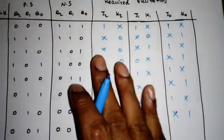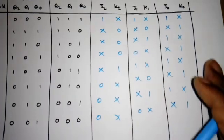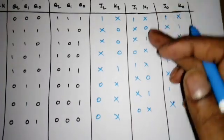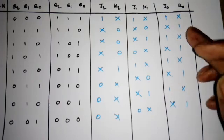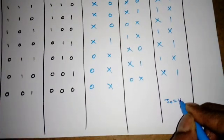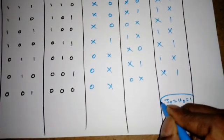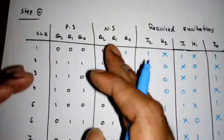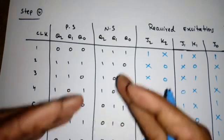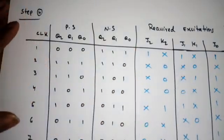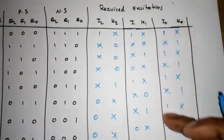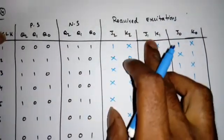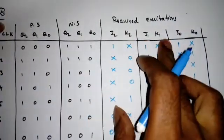We need 6 K-maps, but we can eliminate 2 directly. If you look at J0, it is always either 1 or don't care, so I can make it an octet and write J0 = K0 = 1, because Q0 is always toggling and it toggles when J and K are both 1. So we can eliminate those two K-maps and proceed with the remaining four K-maps for J2, K2, J1, K1.